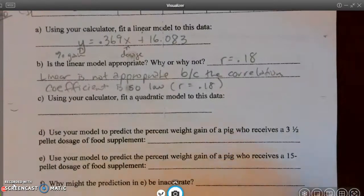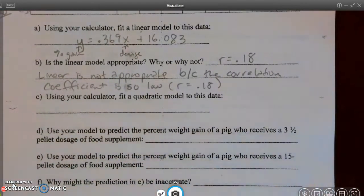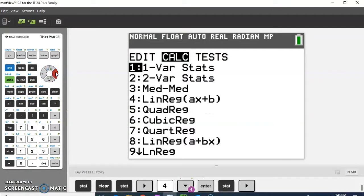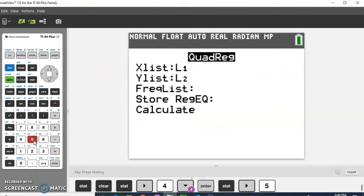All right. So then it says, using your calculator, fit a quadratic model to the data. So since I'm fitting a quadratic model to the data, I have to go back to stat. I'll go over to calc. And this time, I'm going to choose quadratic regression model. We've done number 4, linear regression. We've done 0, exponential regression. Now we're going to look at choice 5, which is the quadratic regression. I'll ask them to calculate that for us.